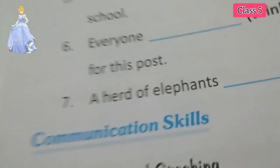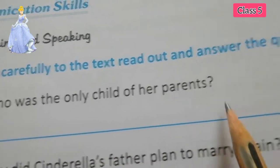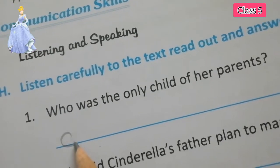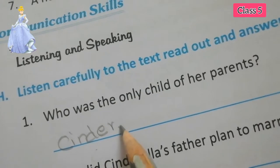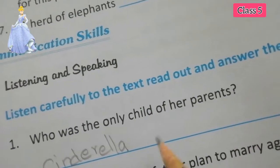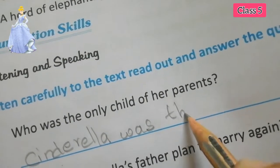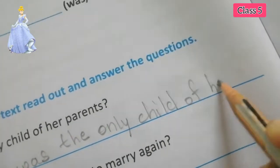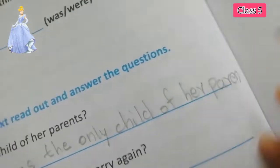Now look at the practice book. Open your practice book, term 3, page number 28. Question: who was the only child of her parents? Answer: Cinderella was the only child — O-N-L-Y C-H-I-L-D — of her parents. Full stop.